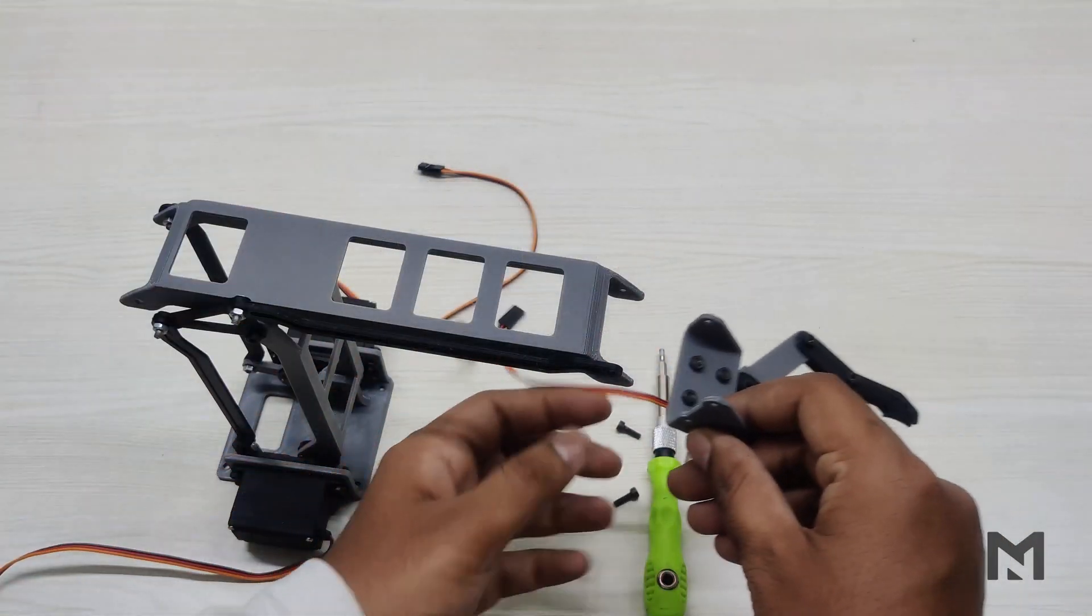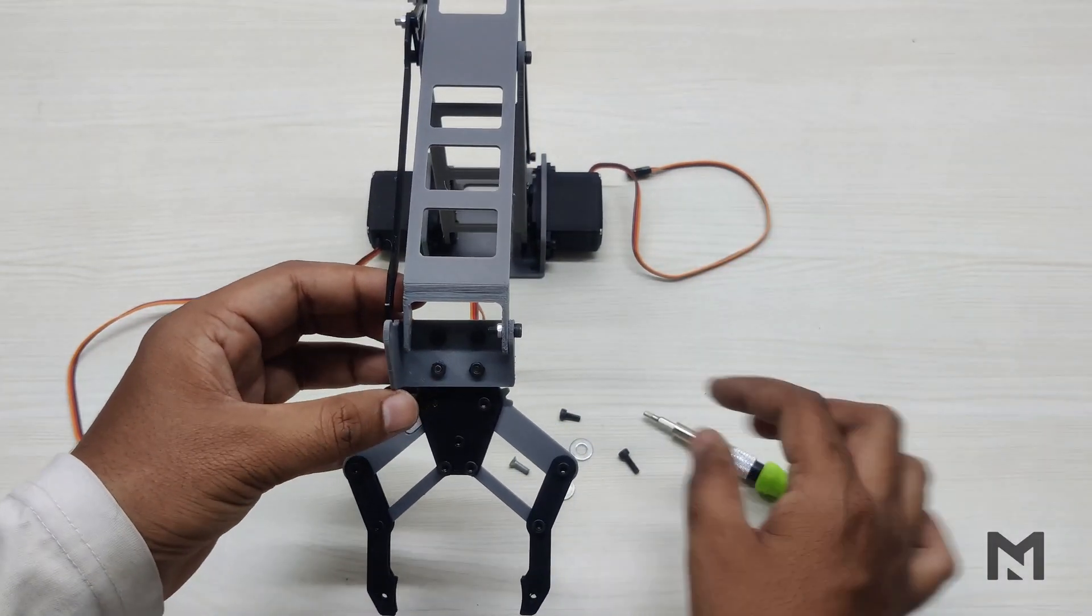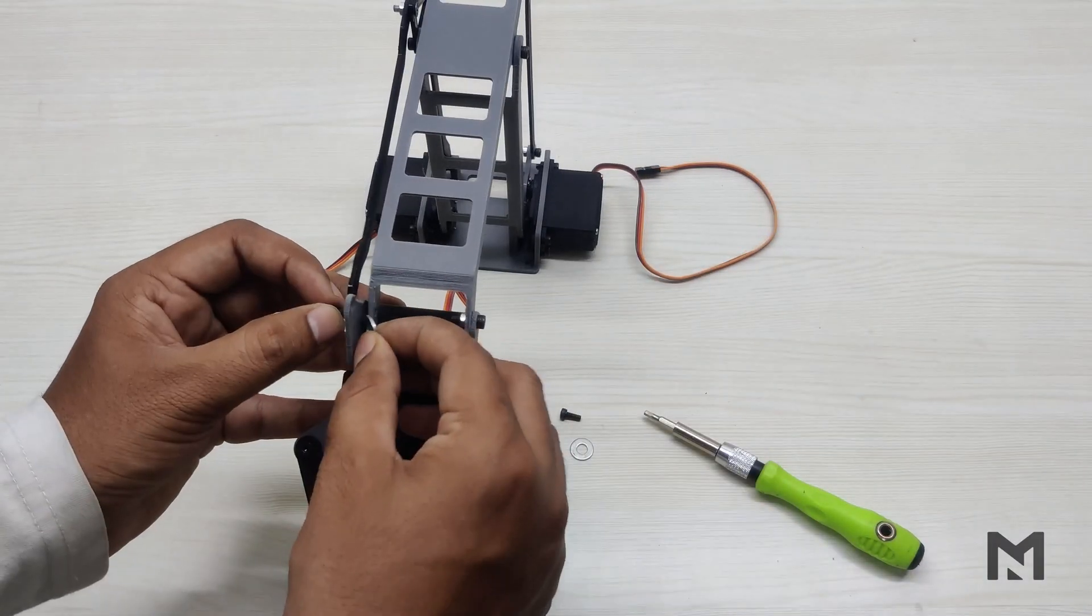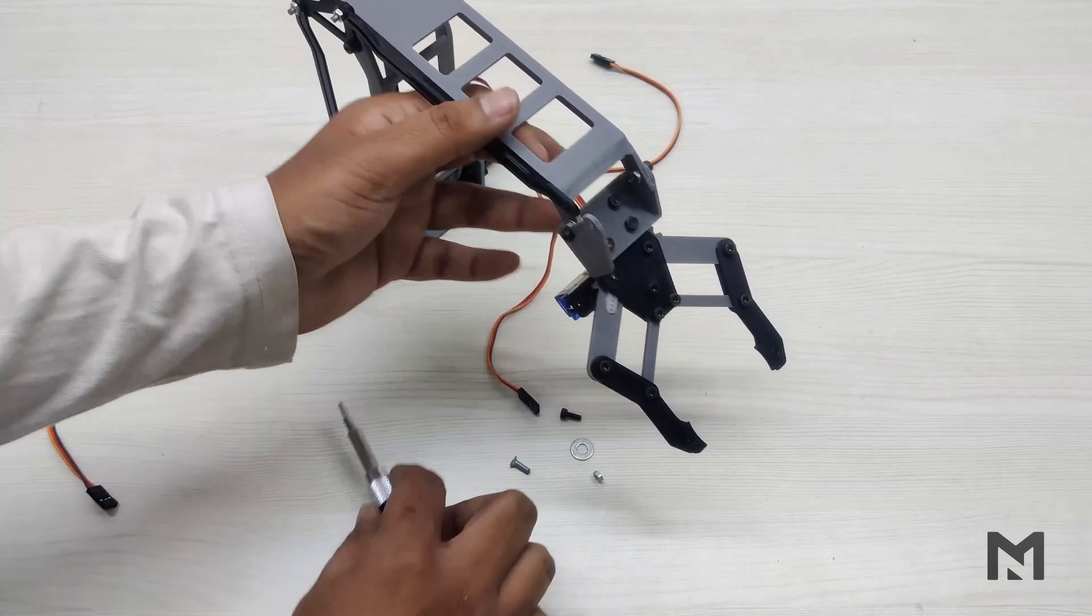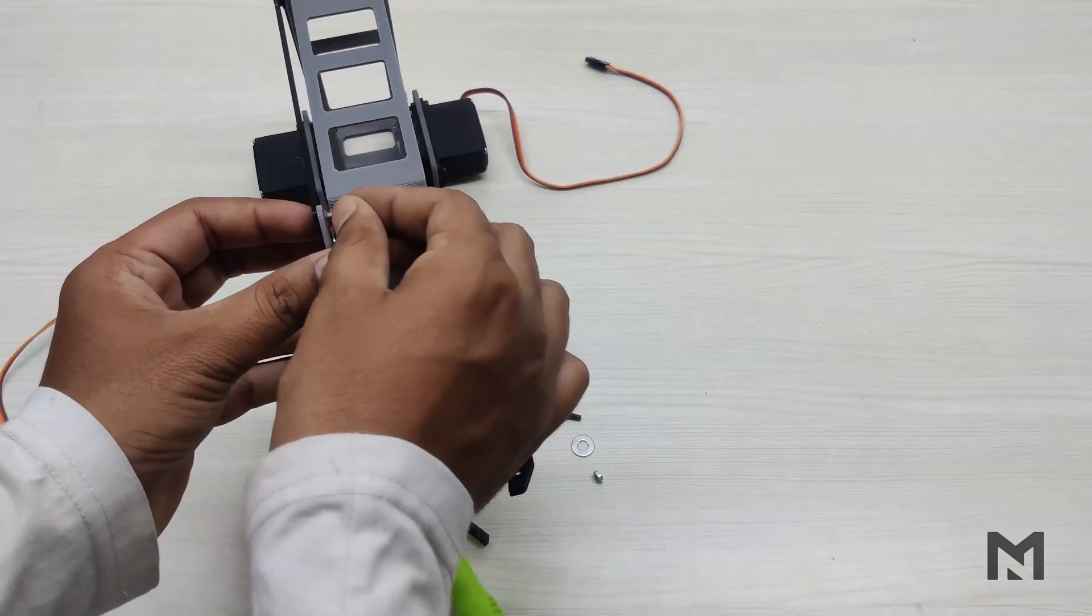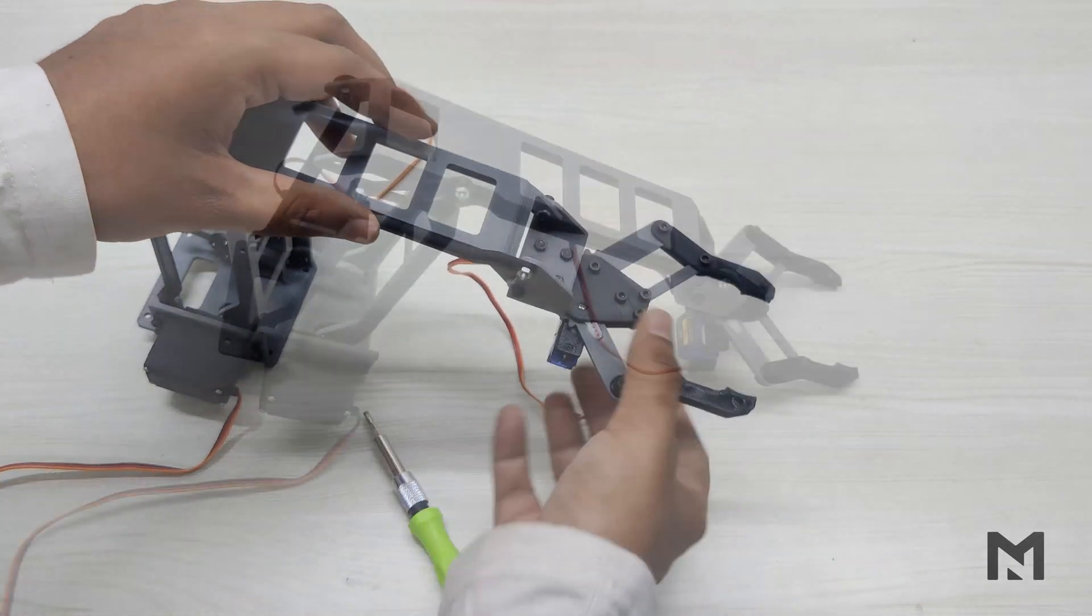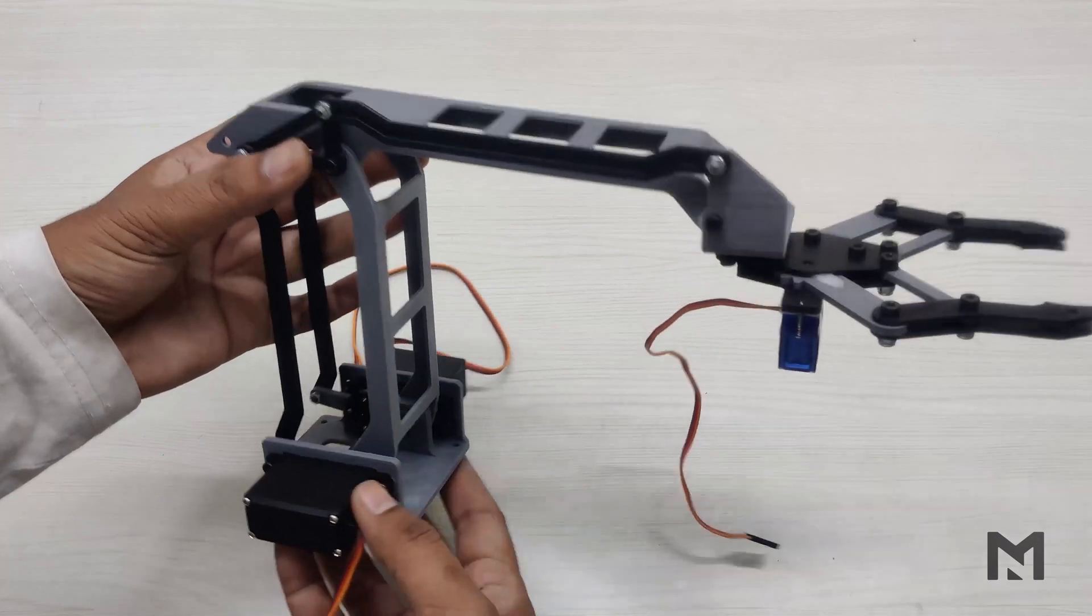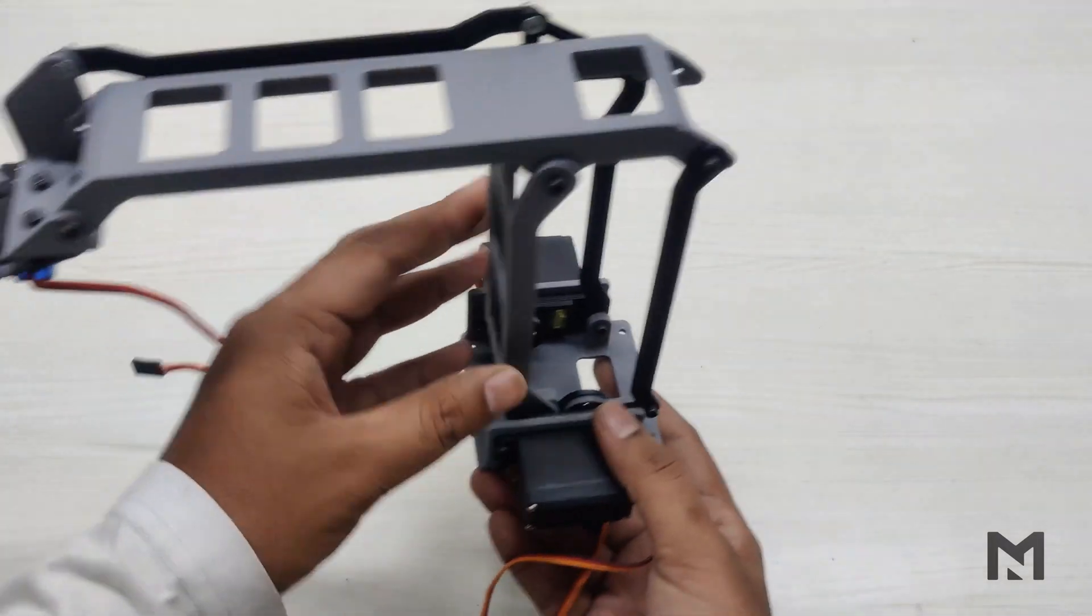Now we will attach the claw to the mechanical arm. Connect one side of the claw with the 10mm screw and tighten it. While connecting the second side, insert a washer between them and tighten the screw. Then connect the horizontal link with the claw using a flat head screw. Now our mechanical arm and claw assembly is completed. Carefully observe the assembly and tighten any screws if there is any loose part.